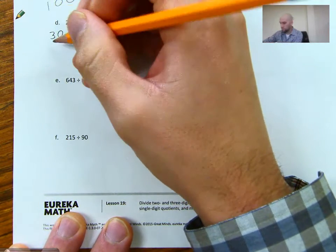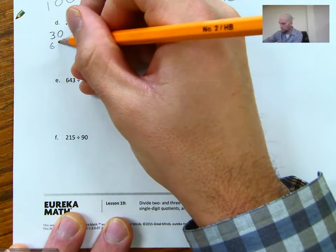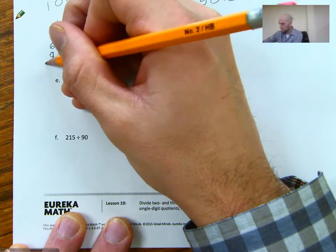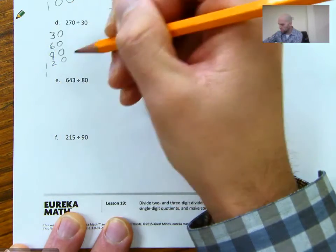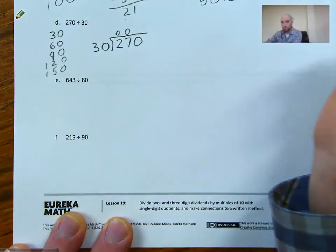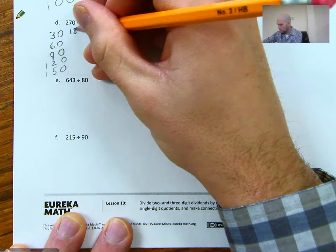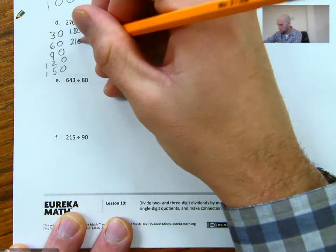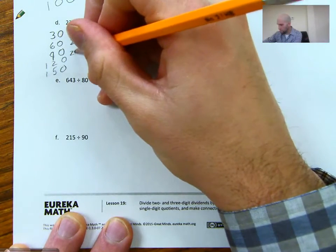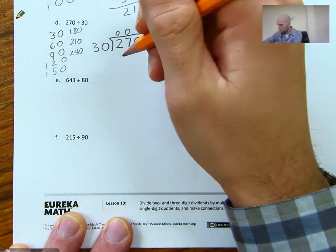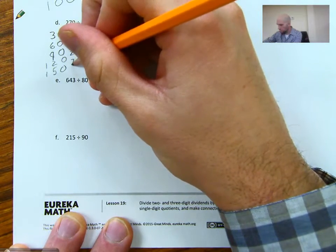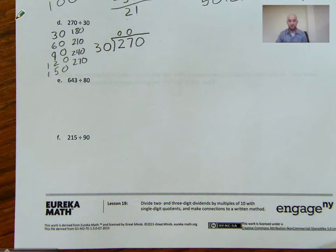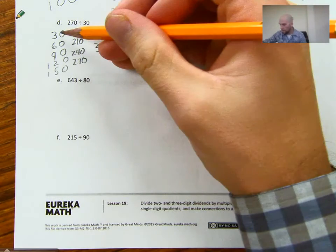30, 60, 90, 120, 150. You got to keep going. 180, 210, 240, 270. Oh, and look at that. We have 270 is a factor of 30.